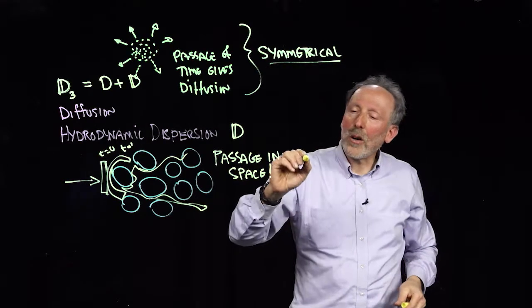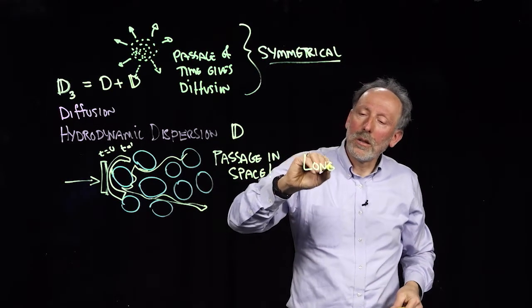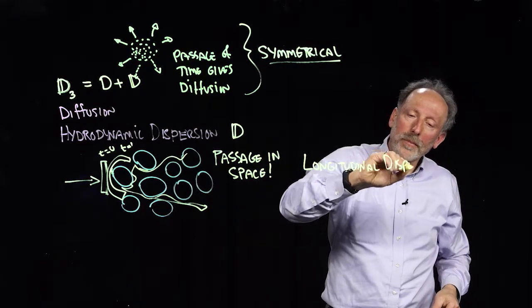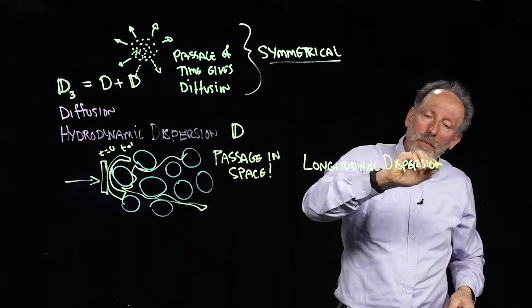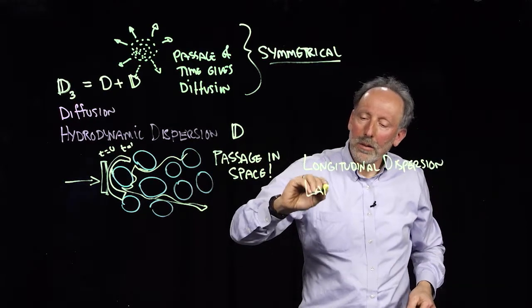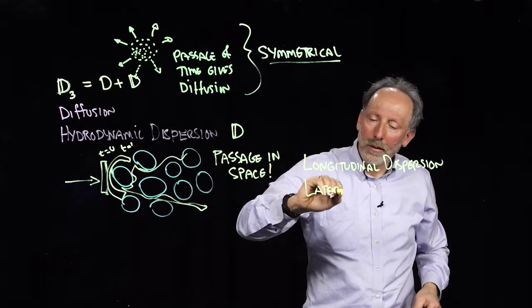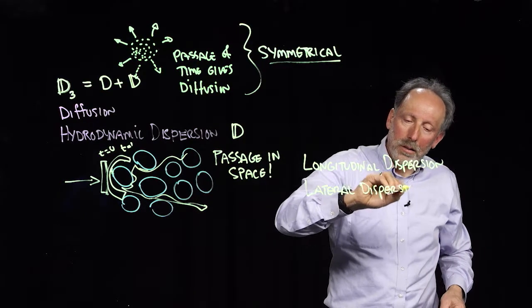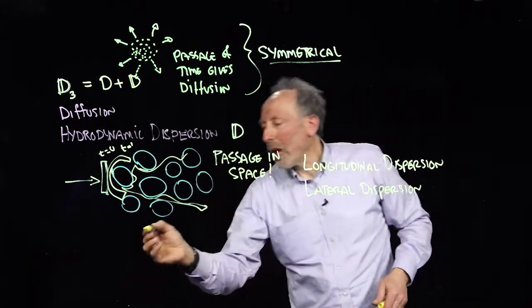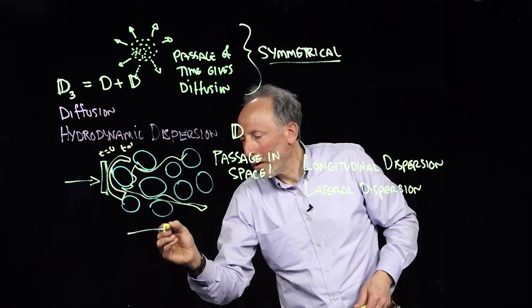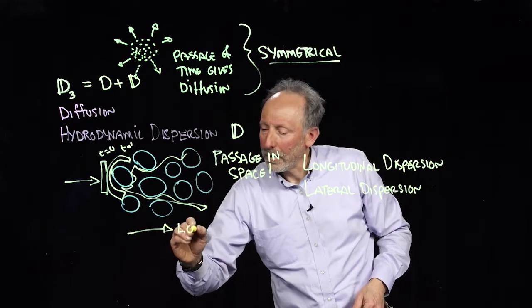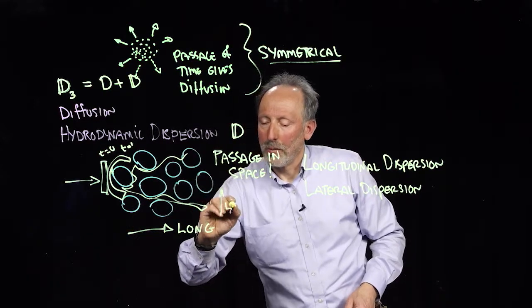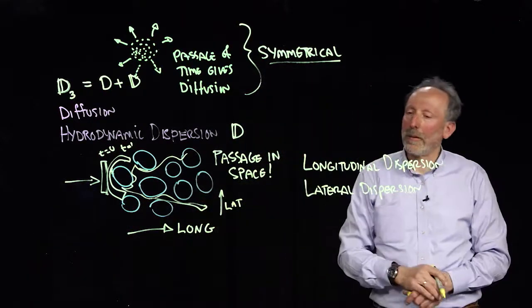We have what we call longitudinal dispersion and lateral dispersion. Longitudinal is this way, and lateral would be across the direction of flow.